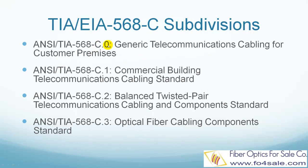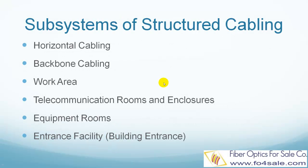The TIA 568C is actually composed of four documents. The C.0 defines generic telecommunications cabling for customer premises. The C.1 defines the Commercial Building Telecommunications Cabling Standard. The C.2 defines Balanced Twisted Pair Telecommunications Cabling and Components Standard. And finally, the C.3 defines Optical Fiber Cabling Components Standard.